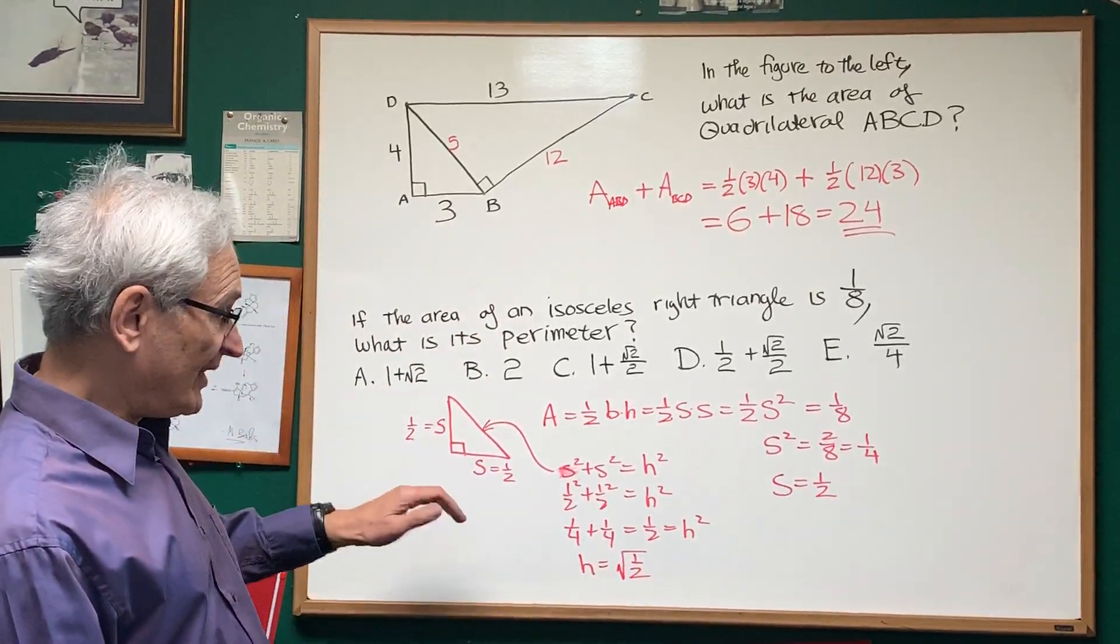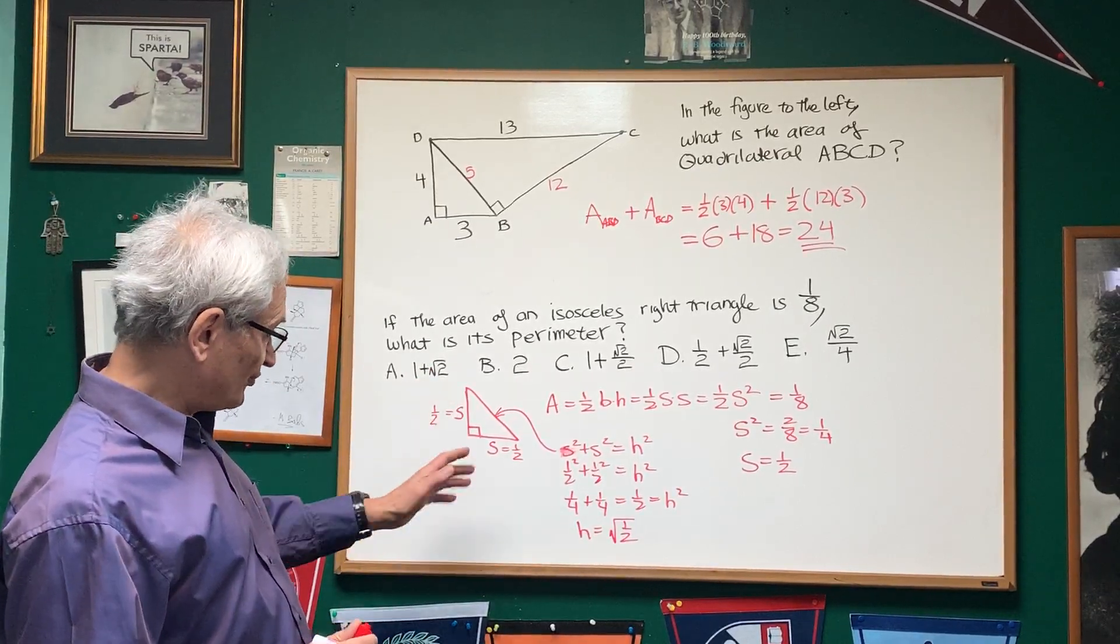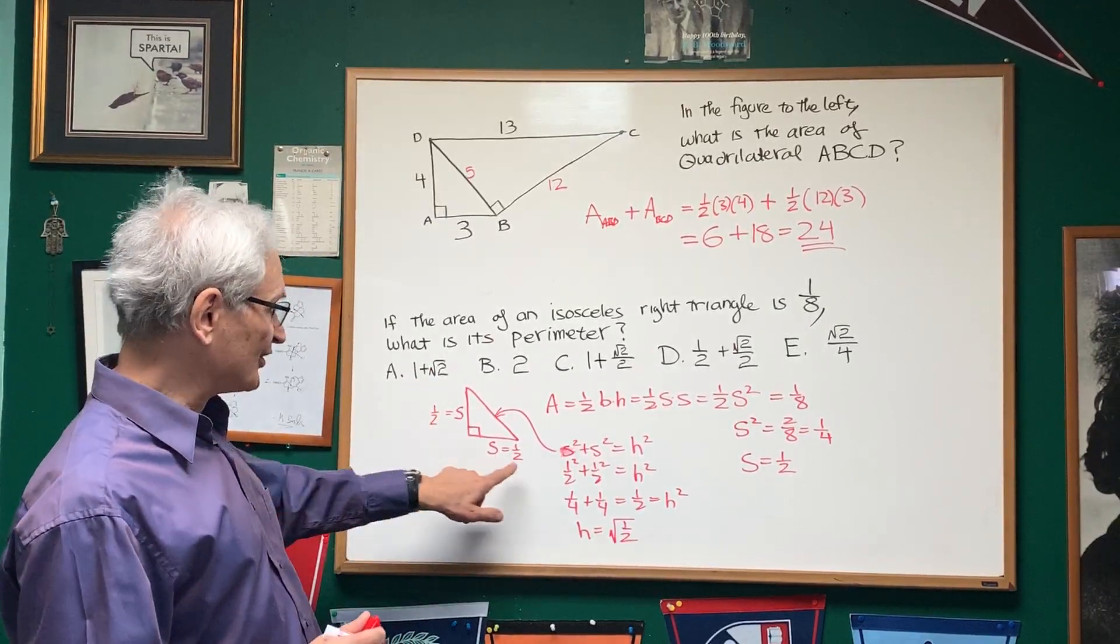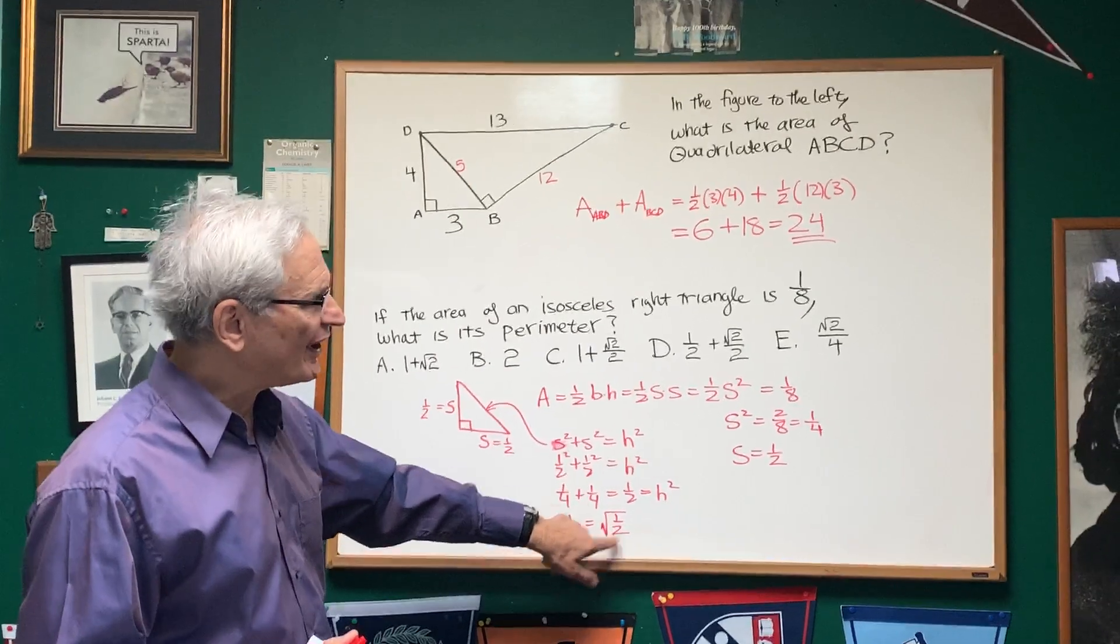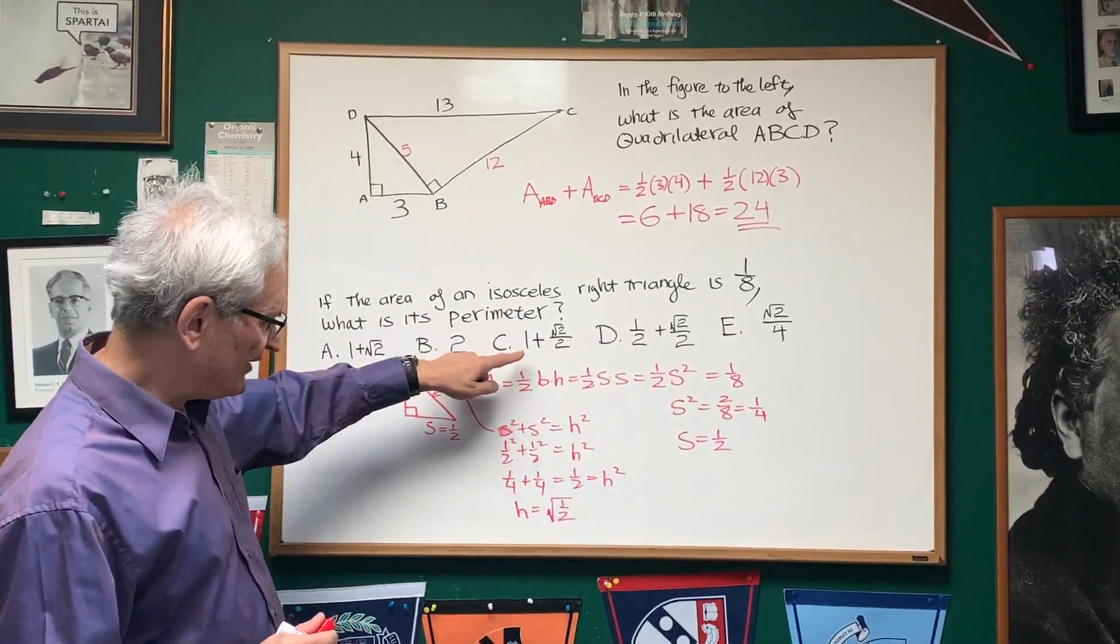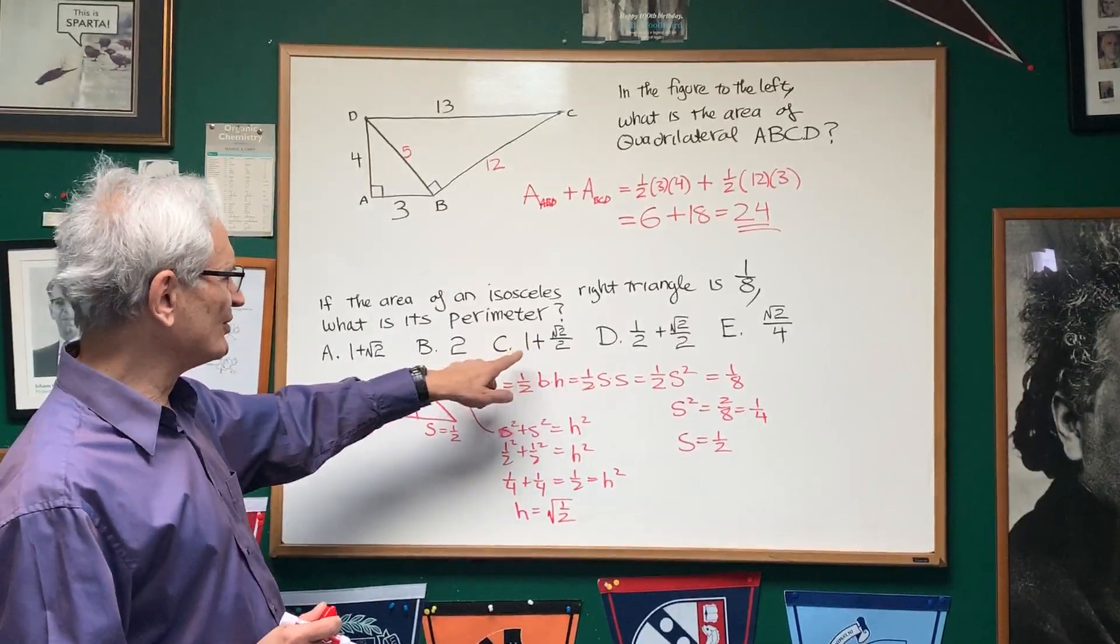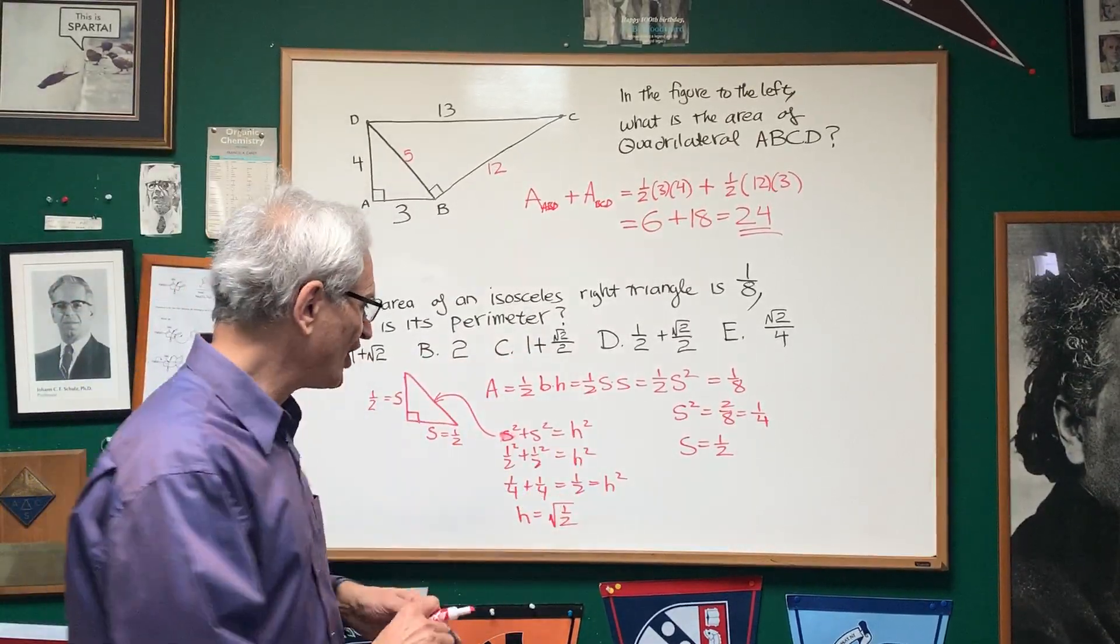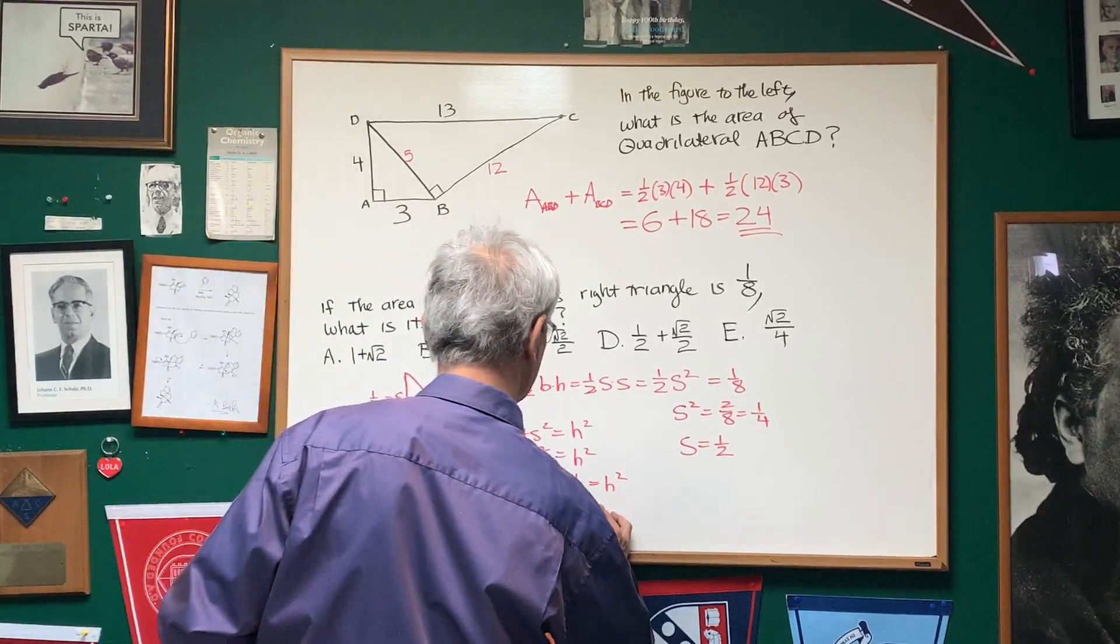So, that means that the perimeter of this triangle is going to be one-half plus one-half plus the square root of one-half. But if I look at my choices of answers here, I see that there are no square roots in the denominator, which is appropriate. So, I want to rationalize this denominator.